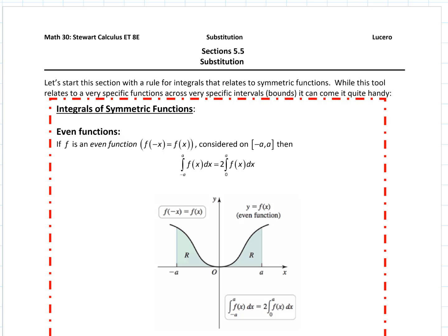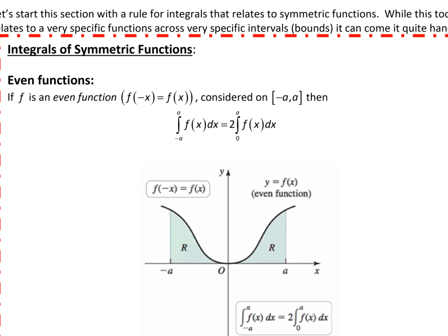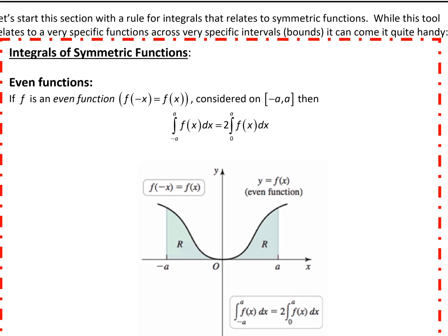If we happen to have an even function and we consider an even function across a symmetric interval from negative a to a — so if we are integrating an even function, and remember that an even function is symmetric across the y-axis — this is going to be exactly equal to 2 times the integral from 0 to a.